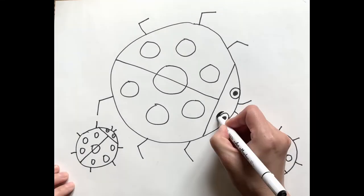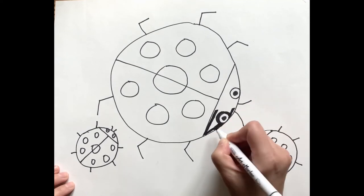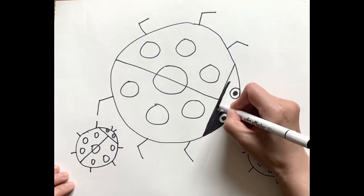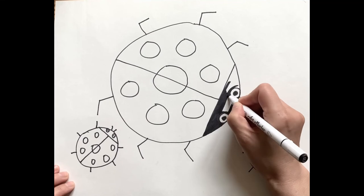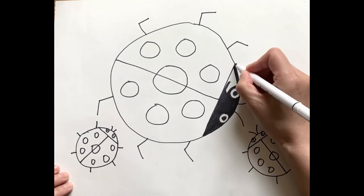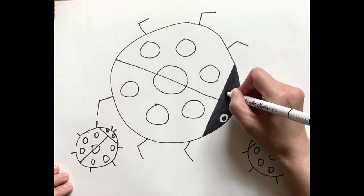Now coloring. If your marker doesn't smear, it's okay to start with black. If your marker smears, you should start with any other color and the black is the last one.